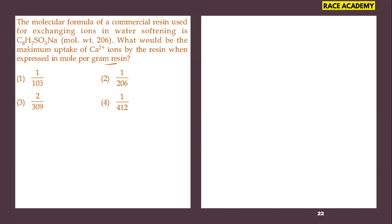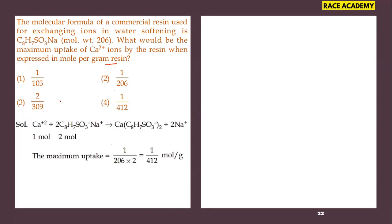The molecular formula of the commercial resin is given. When you observe this molecular formula with calcium ions from hard water, you should take two moles of this resin — one mole of calcium displaces two moles of sodium. So the maximum uptake will be 1/206 × 2, that is 1/412 moles per gram resin. The answer is the fourth option.